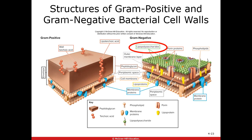This slide shows the comparison: gram positive bacteria have a super thick cell wall and just a normal cell membrane. Gram negative bacteria have a super thin cell wall but two membranes that anything trying to kill them has to get through.